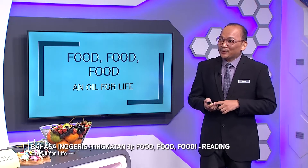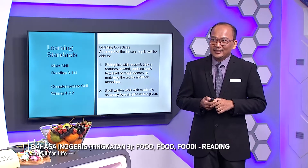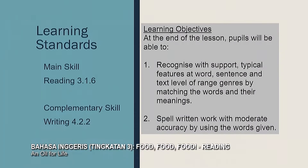Okay, so the title for our discussion today is going to be 'Food, Food, Food and All for Life.' We are going to focus on reading. Okay, so these are the learning standards — the main skill is reading and the complementary skill would be writing. The learning objective: at the end of the lesson, pupils will be able to recognize with support typical features at word, sentence and text level of a genre by matching the words and their meanings, and also spell written work with moderate accuracy by using the words given.